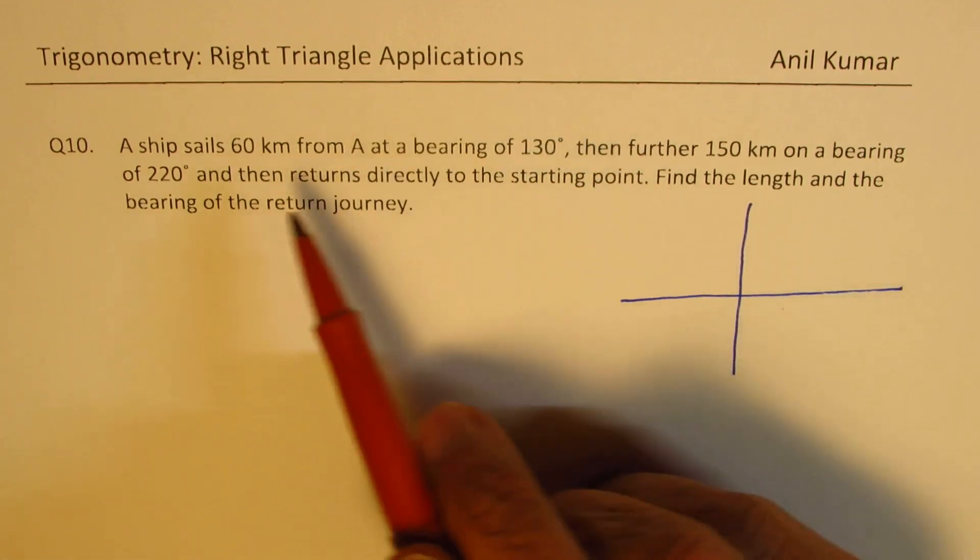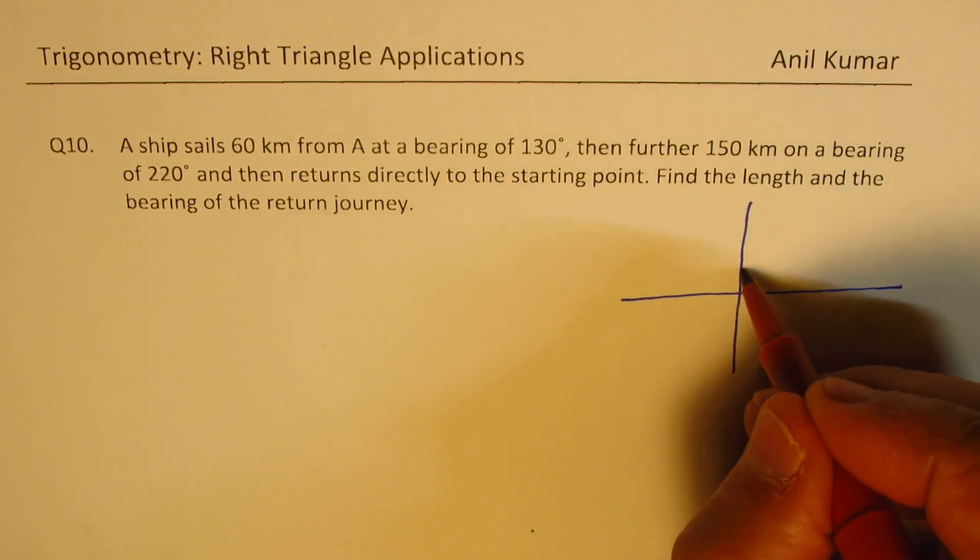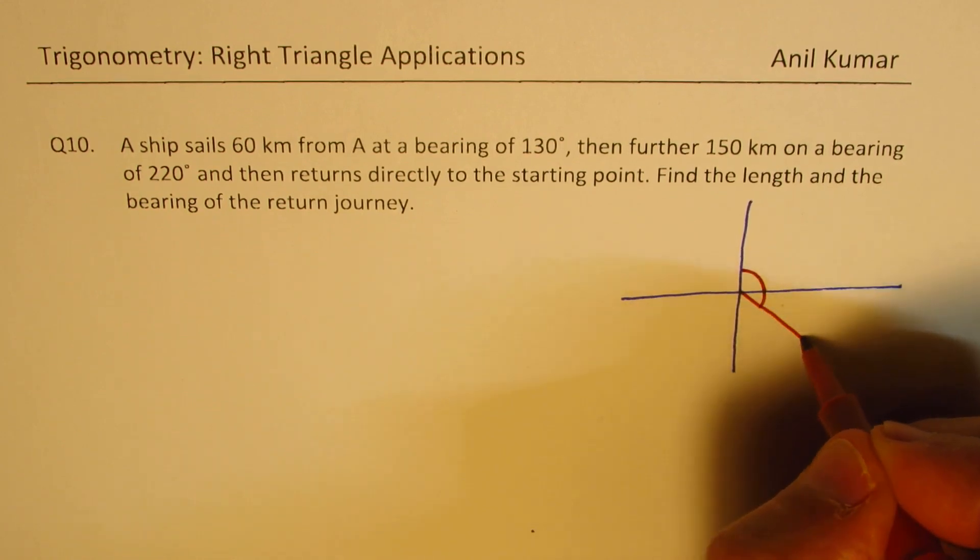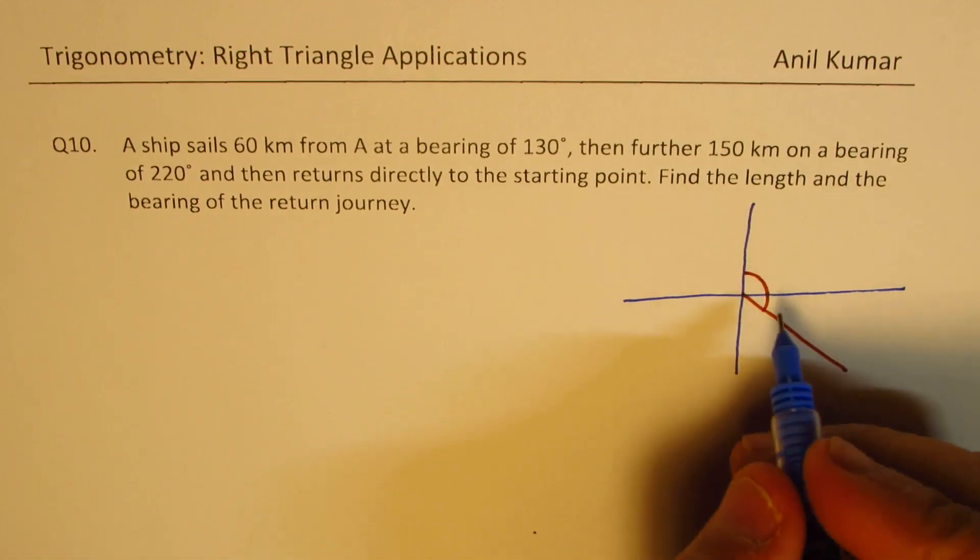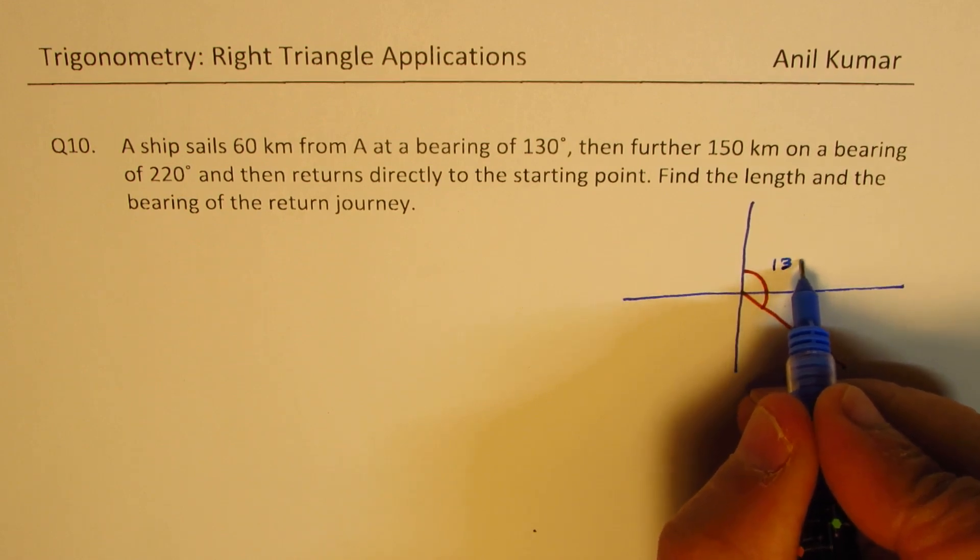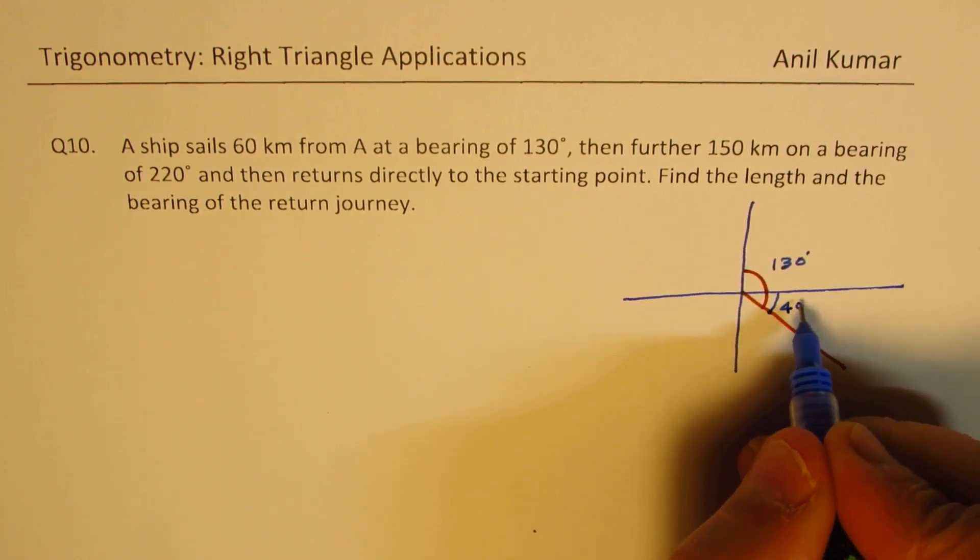When we say 60 km at a bearing of 130, that means the angle from here is 90 plus 40, right? So that becomes the angle. So this angle is 130 degrees, that means 90 plus this angle here is 40 degrees, correct?